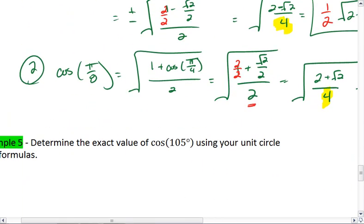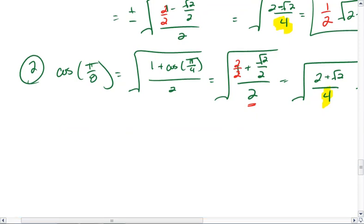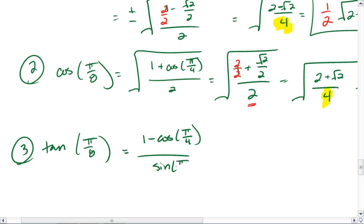And lastly, we want to look at tangent. Again, you can either use your equation for tangent, or you can use your knowledge that tangent is sine over cosine. I'll use the equation here. We get tangent pi 8ths is 1 minus cosine of pi 4ths, all over sine of pi 4ths.